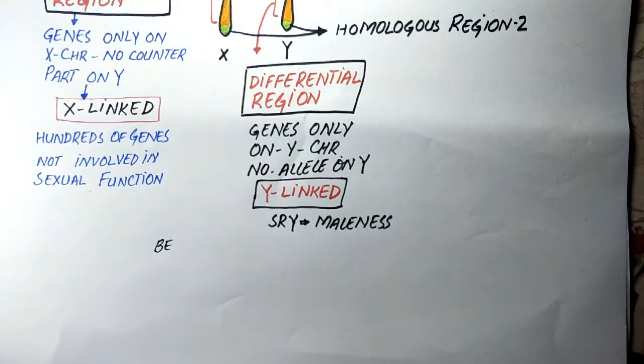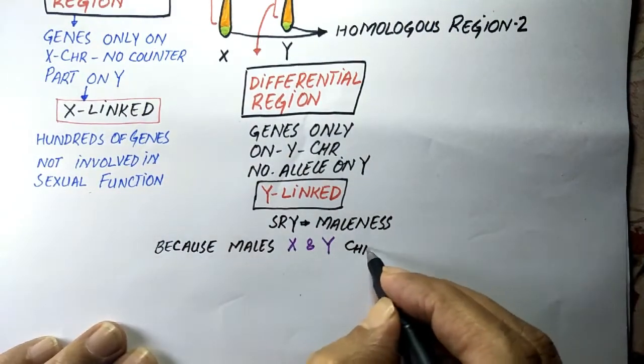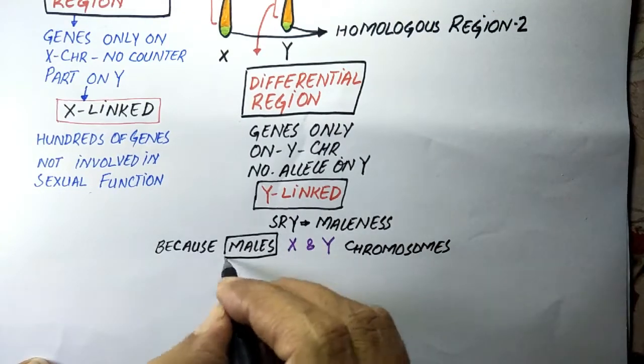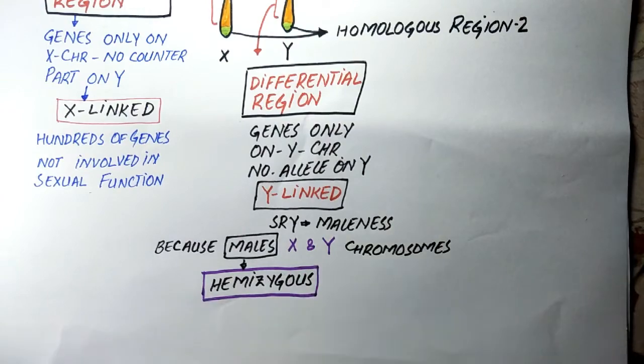Males are called hemizygous due to the differential regions of X and Y chromosomes, because they contain a single copy of genes on the differential region of X and a single copy of genes on the differential region of Y.